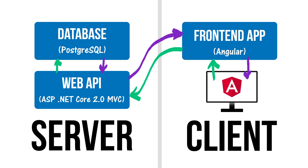That's the overall setup for the way that this Angular front-end application will be interacting with our web API. Just useful to keep in mind that the Angular side of things is running in the browser on the client side, while our web API and database will be running on a separate server. Angular and our web API will be running on two separate servers — Angular driven by Node, and our web API driven by .NET.